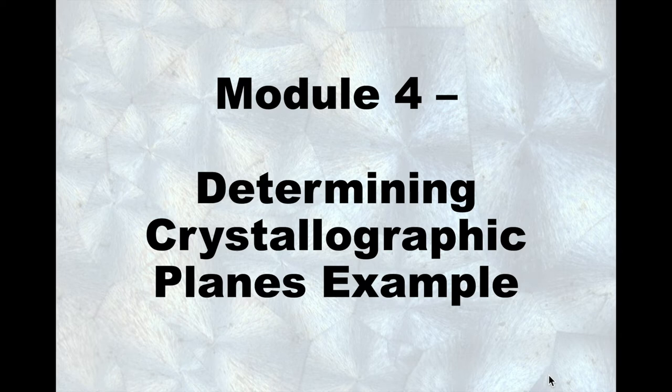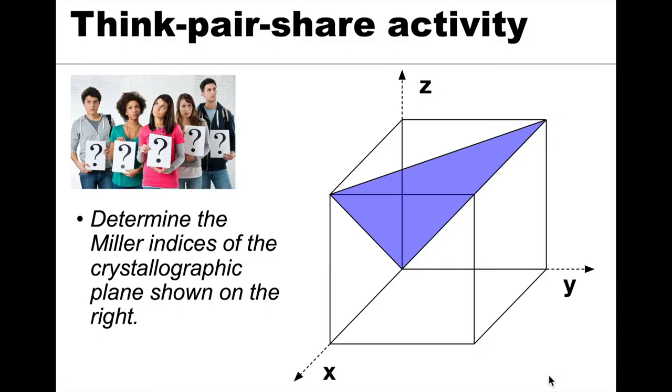All right, so now that we've gone over the procedure for determining planes, let's go through an example together. This is going to be on your quiz. I've got the picture of a plane shown here. What I want you to do is determine those Miller indices and write it as we would write a crystallographic plane. Pause the video, and then when we come back, I'm going to show you what I have in the procedure for this plane.